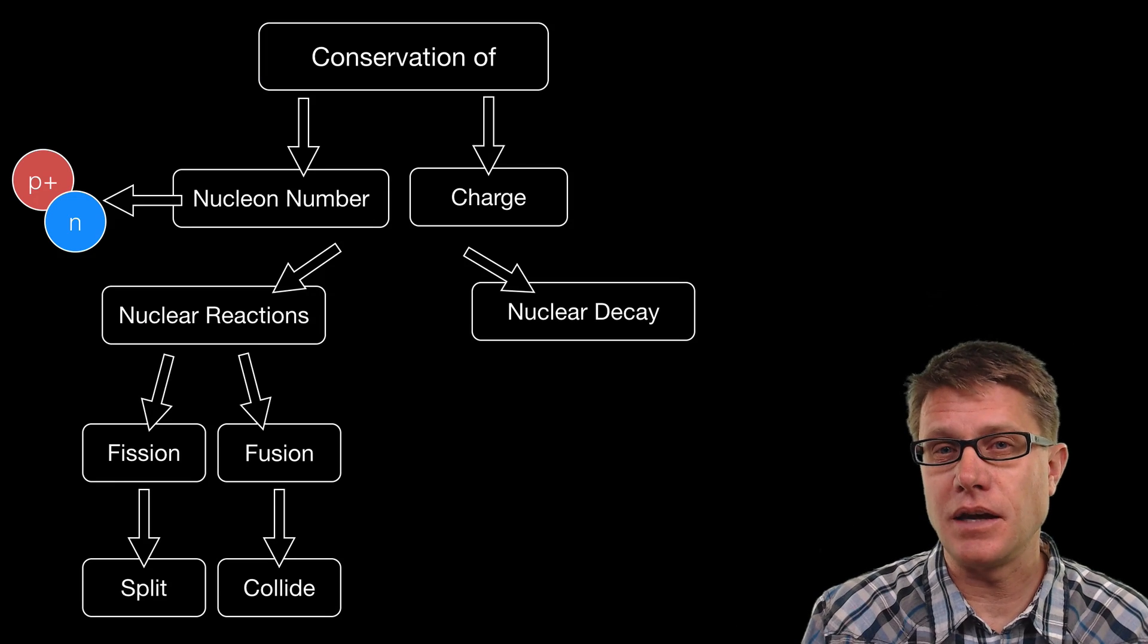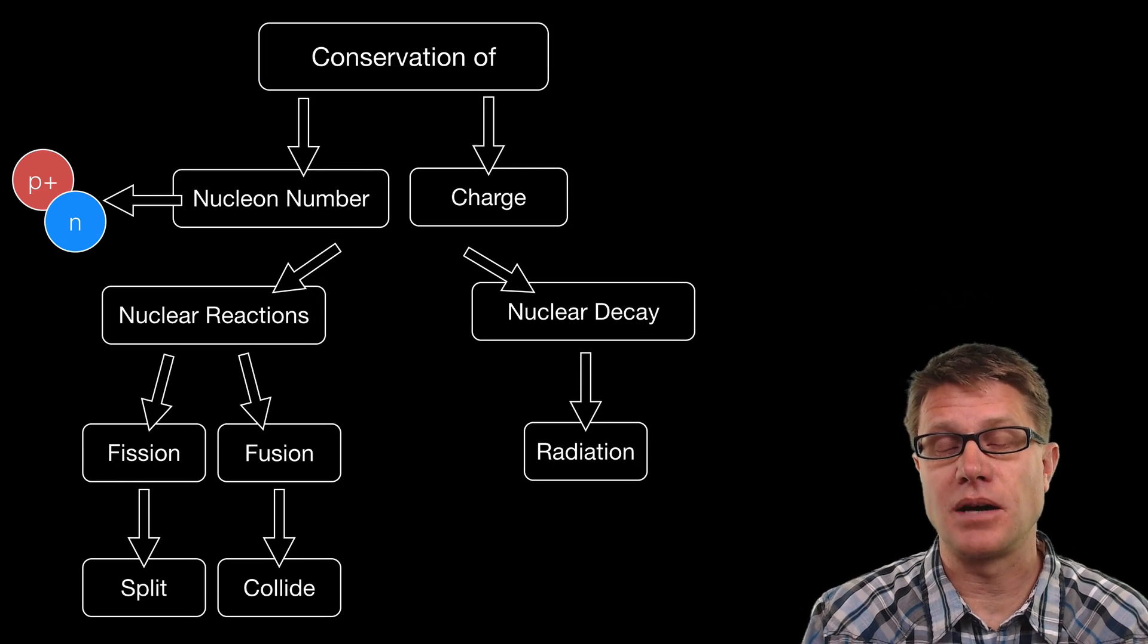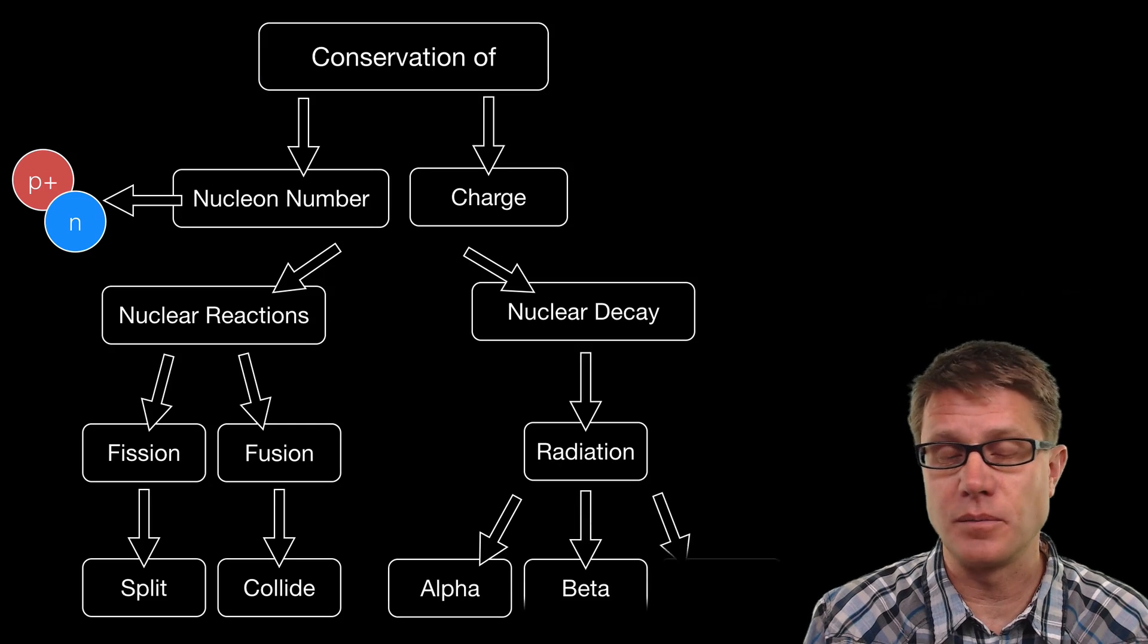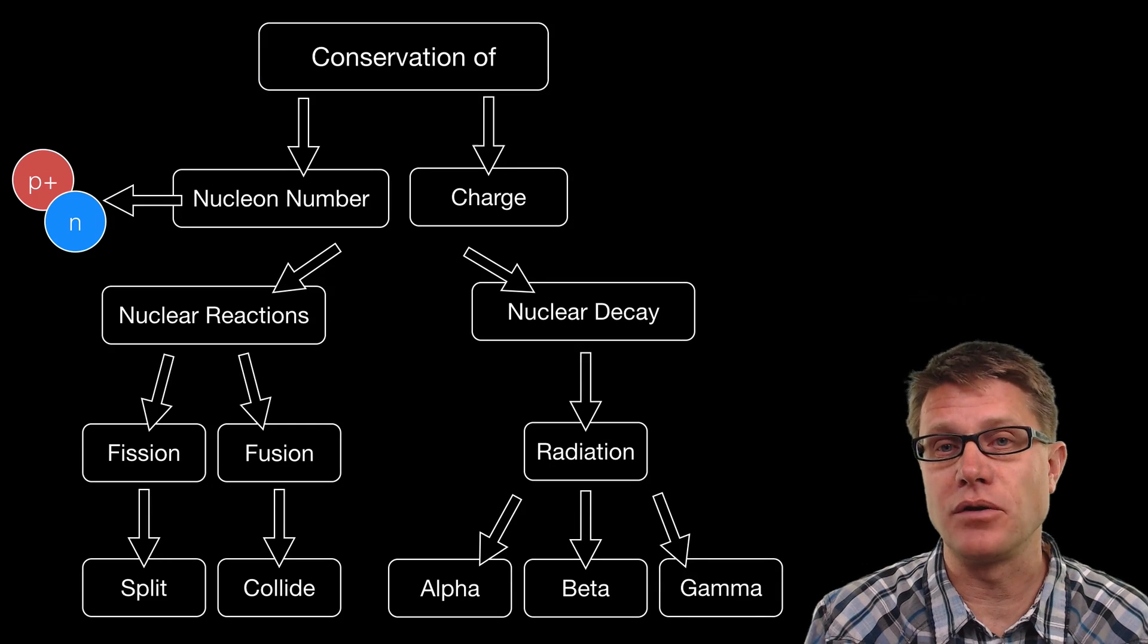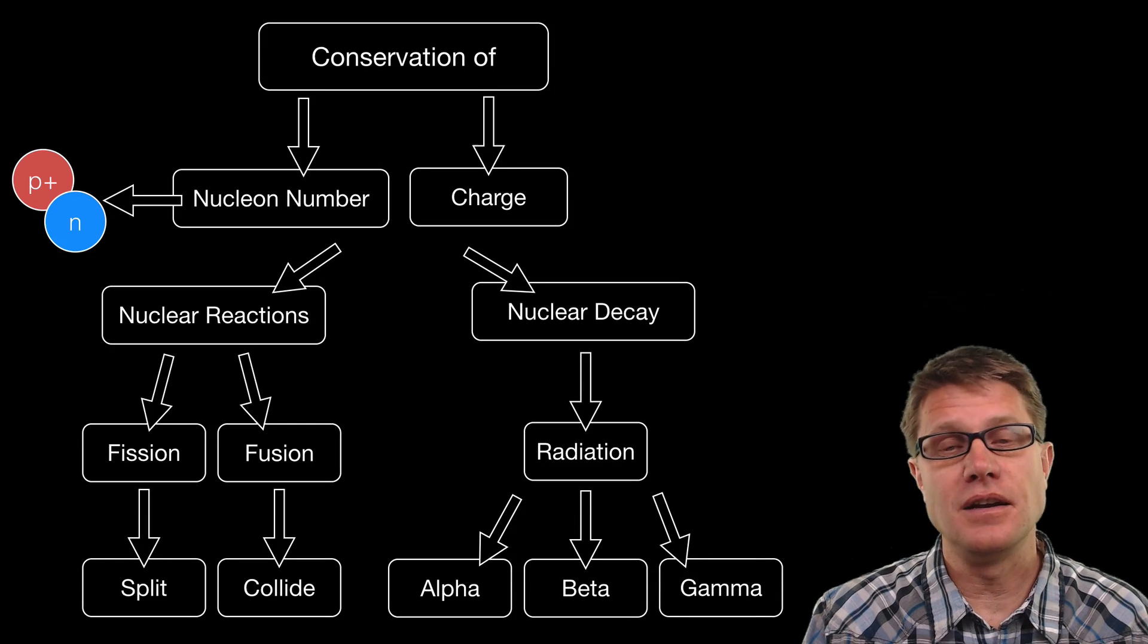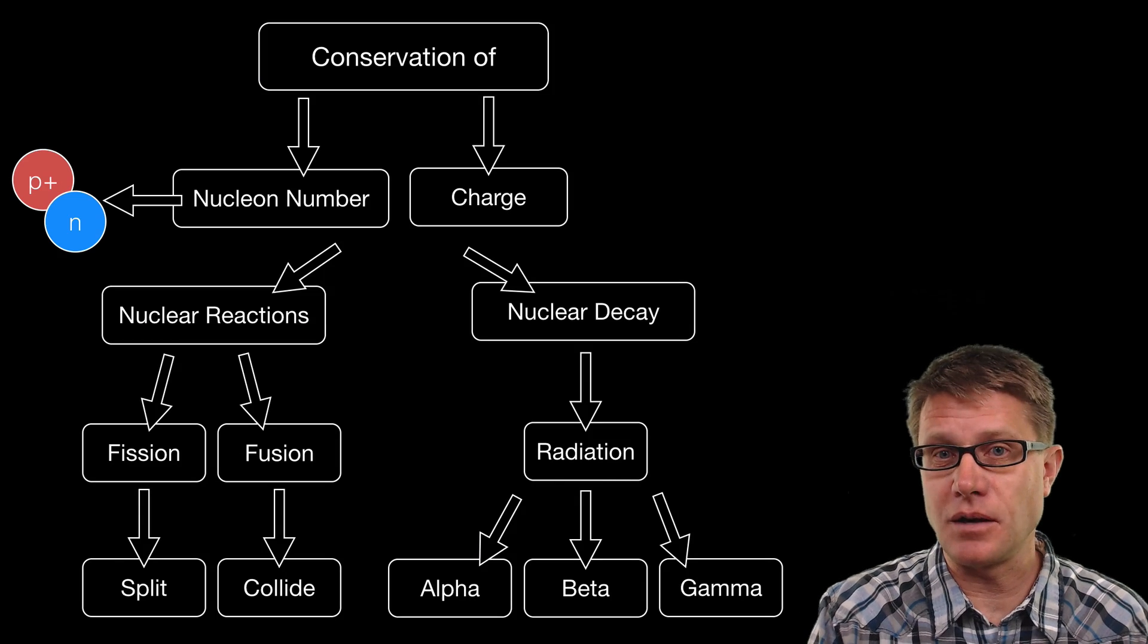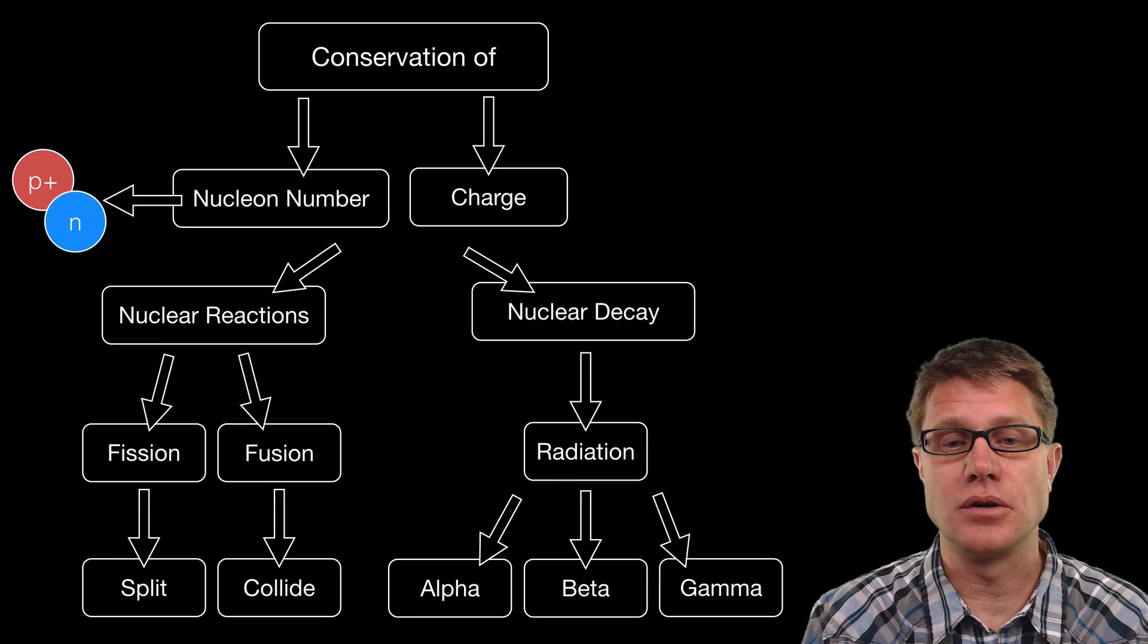In nuclear decay that is when an atom is giving off radiation. It is releasing a certain amount of energy. It comes in three forms or many forms. Alpha, beta, gamma are the ones we will talk about in this. And in radioactive decay nucleon number and charge before and after are going to be equal.